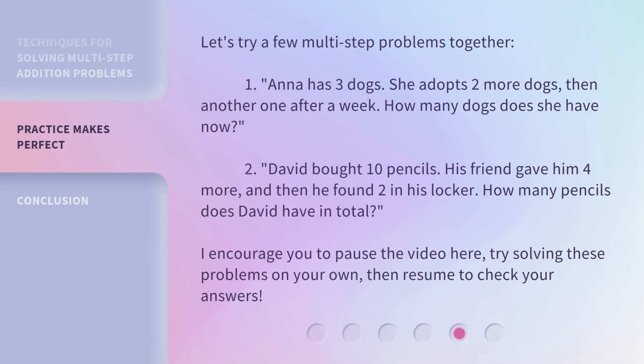Let's try a few multi-step problems together. 1. Anna has three dogs. She adopts two more dogs, then another one after a week. How many dogs does she have now?